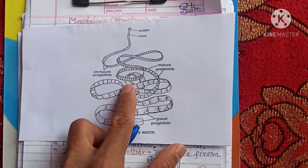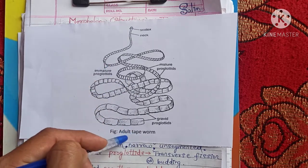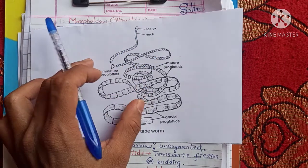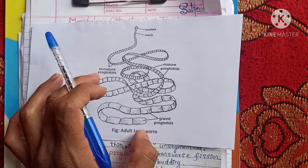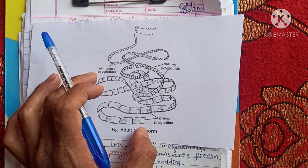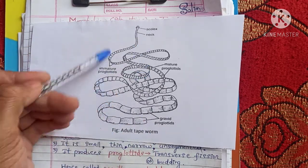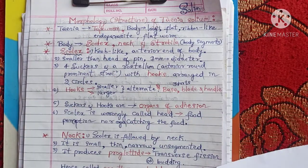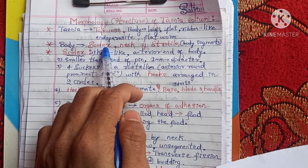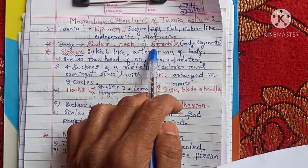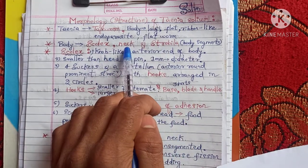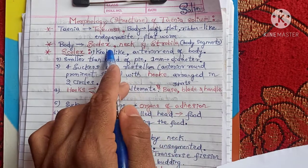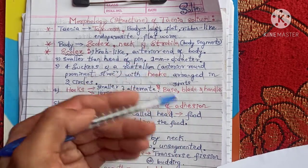Looking at the diagram of an adult tapeworm, the body is very elongated — almost three meters in length. The body of the tapeworm is divided into three parts: scolex, neck, and strobila. Let us study each part in detail one by one.